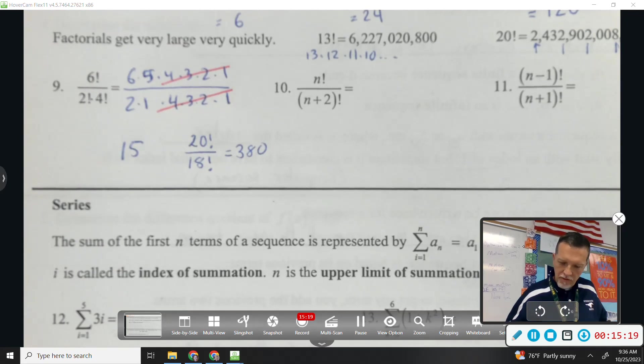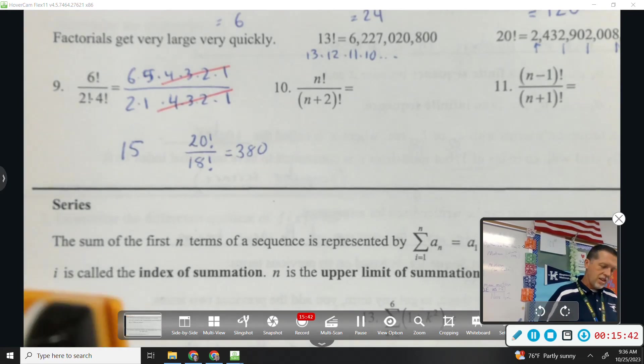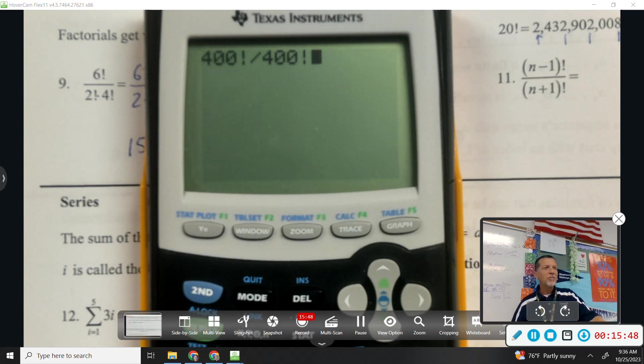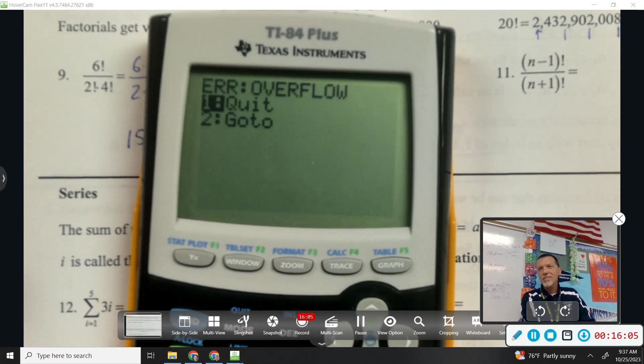Let me squeeze in another example here. 20 factorial over 18 factorial. What would that be? 19 times 20, right? Because 18 on down, whatever it is, it would all be canceling out. So that would be 380. And then my favorite, I think this is still true, that the calculator kind of freaks out on some of this stuff.